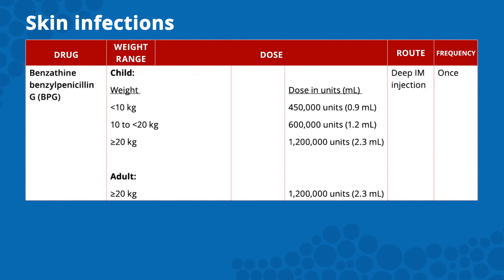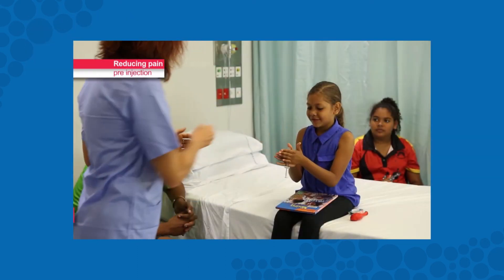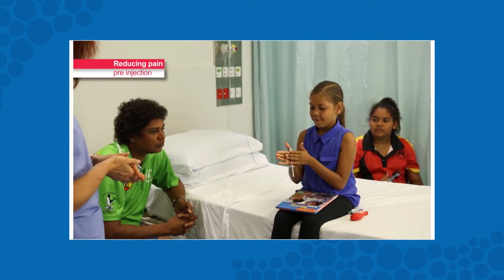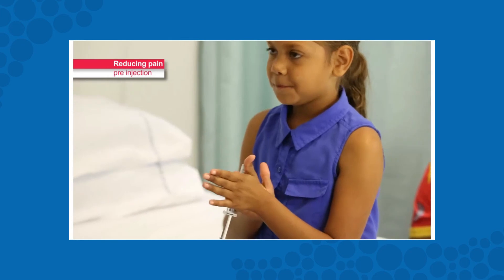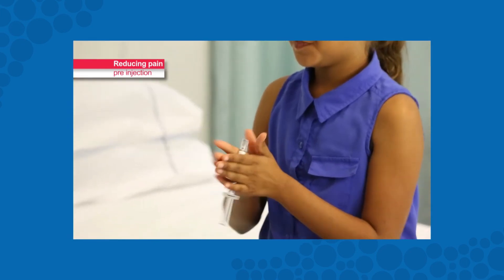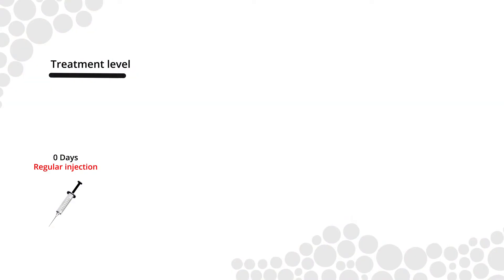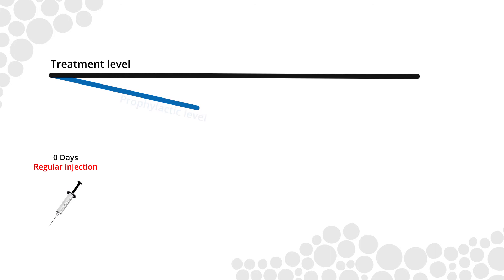Families should be consulted to help decide the best treatment for their child. People who are already receiving regular intramuscular benzathine benzylpenicillin injections for secondary prophylaxis still need treatment for Strep A throat and skin infections. This is necessary because the level of penicillin in the body wanes by about seven days to reach a prophylactic level, which is lower than the required treatment level.